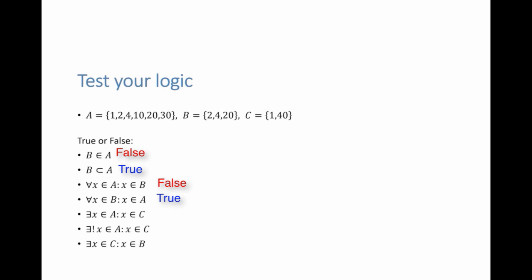There exists an element in A such that this element is also in C. Indeed, I have 1 in both, so this is true. There exists a unique element x in A such that x is also in C. 1 is that element — unique because the other element in C is 40, which is not in A. So there exists one unique element in A that is also in C. Finally, there exists an element x in C such that x is also in B. C has 1 and 40; B has 2, 4, and 20. None of the elements in C are in B, so this last statement is false.